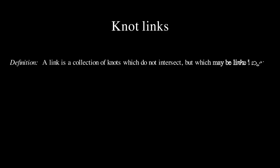Moving on, now we'll talk about links between knots. A link is a collection of knots which do not intersect, but which may be linked together. The simplest non-trivial example of a link with more than one component is called the Hopf link which consists of two knots linked together at once.